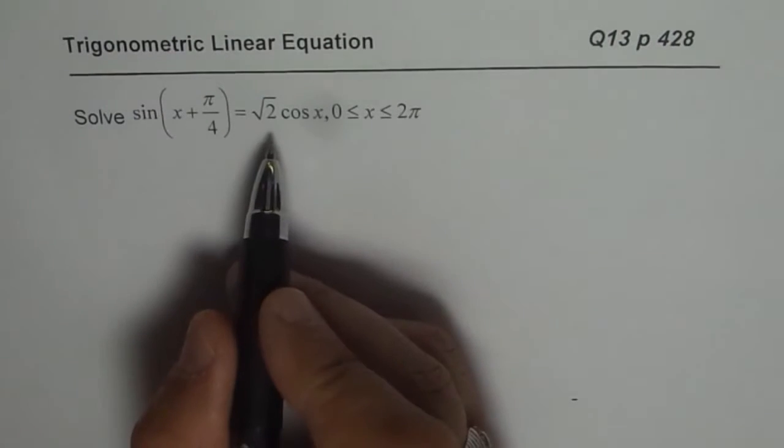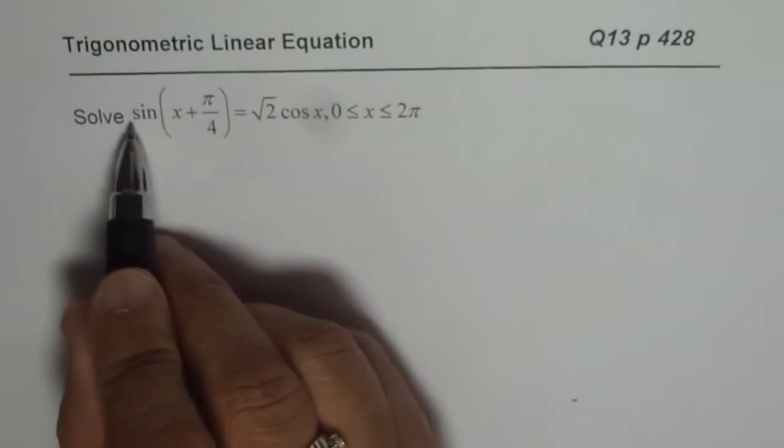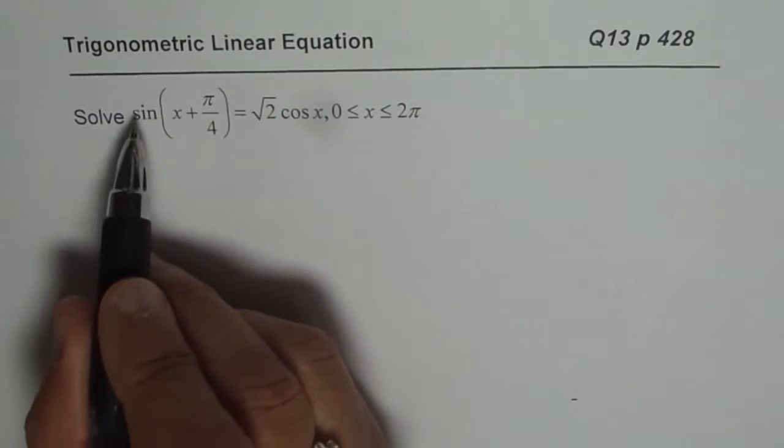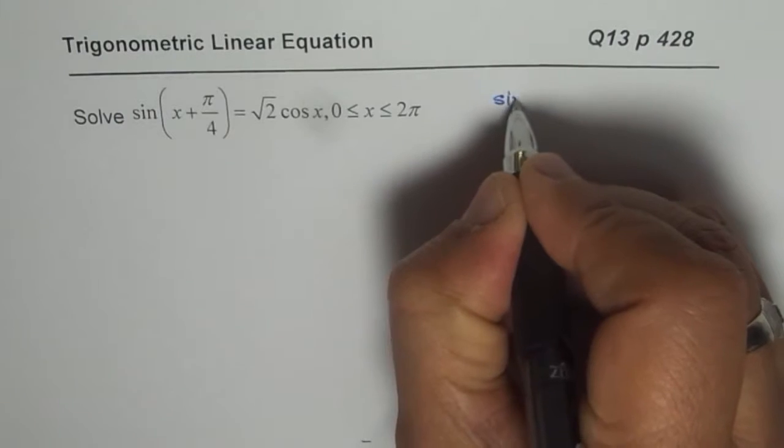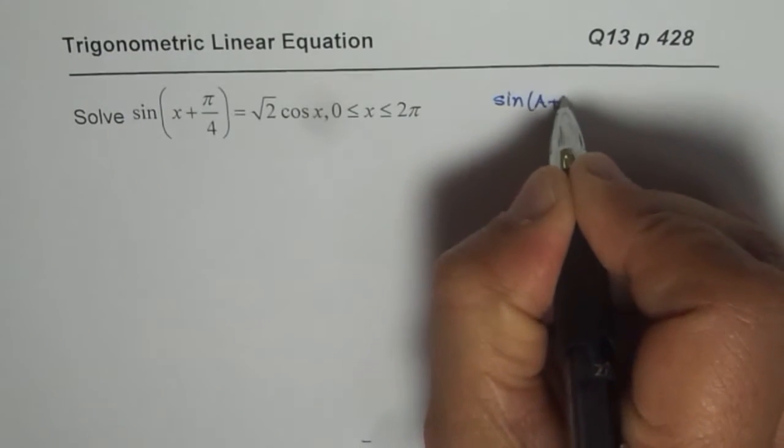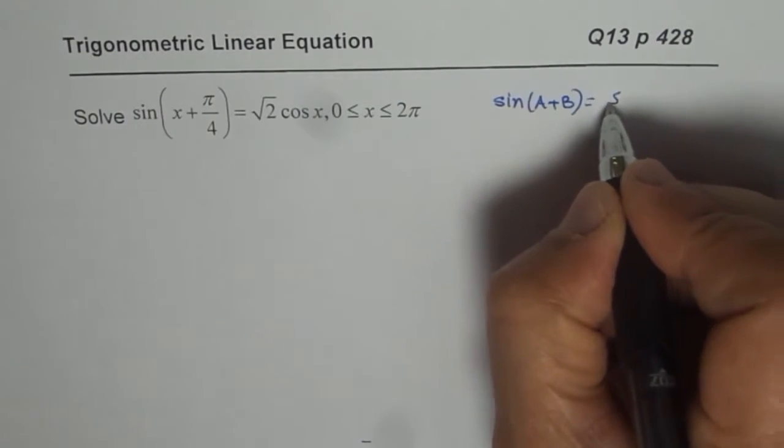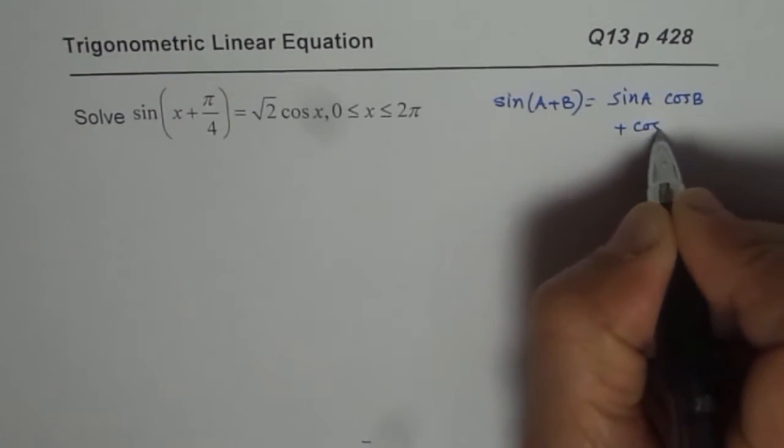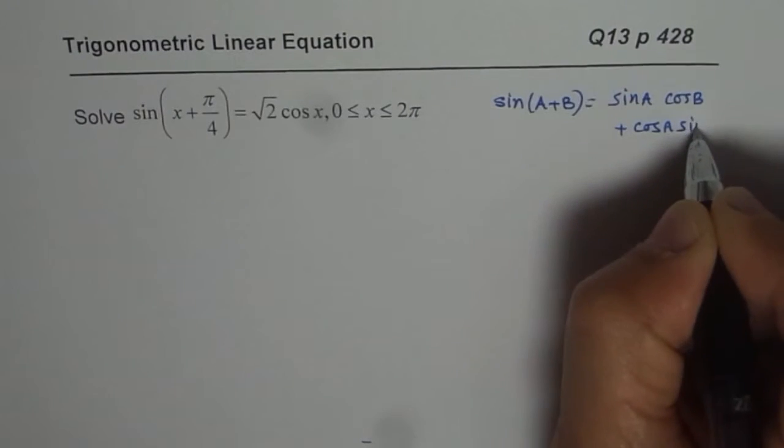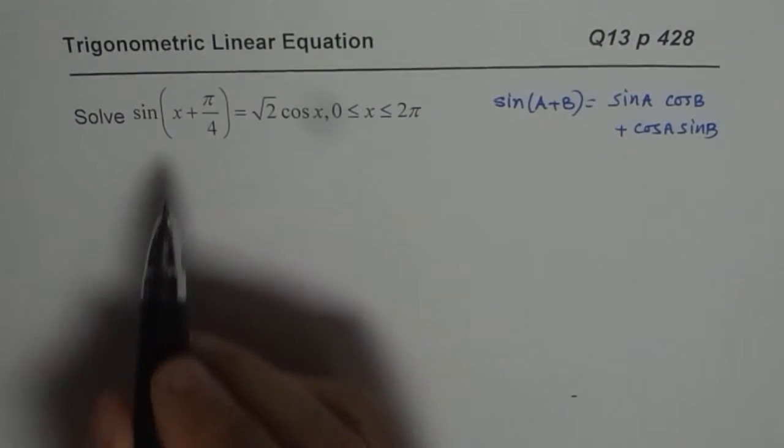To solve this equation, we can use the compound angle formula and expand the left side, sin(x + π/4). Let me write down the compound angle formula first: sin(A + B) = sin A cos B + cos A sin B. We will use this formula to expand.